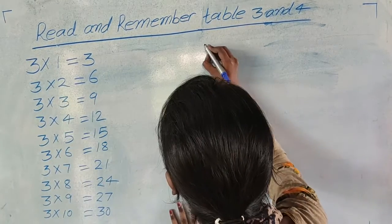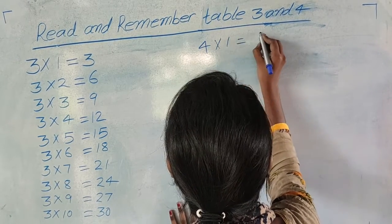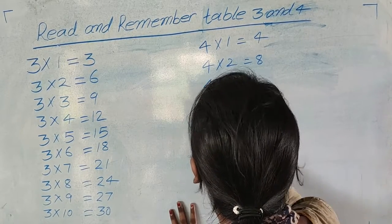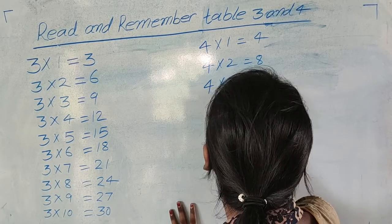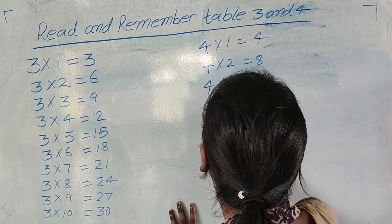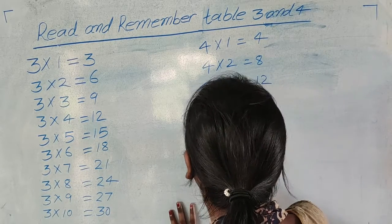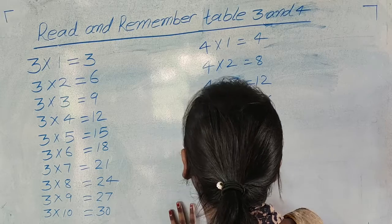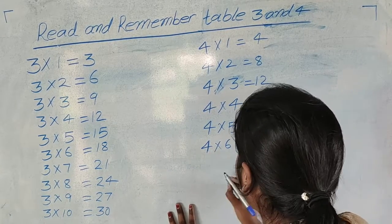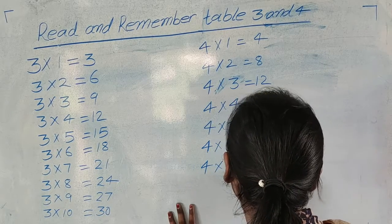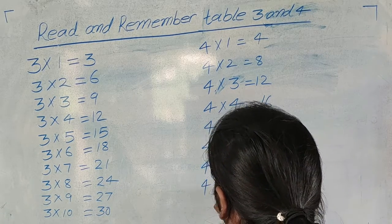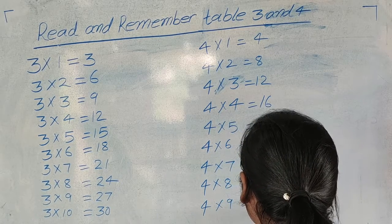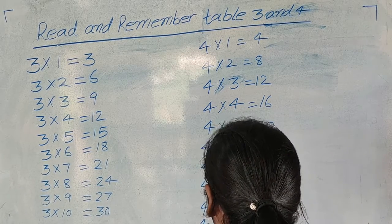अब 4 का टेबल देते हैं। 4 × 1 = 4, 4 × 2 = 8, 4 × 3 = 12, 4 × 4 = 16, 4 × 5 = 20, 4 × 6 = 24, 4 × 7 = 28, 4 × 8 = 32, 4 × 9 = 36, 4 × 10 = 40.